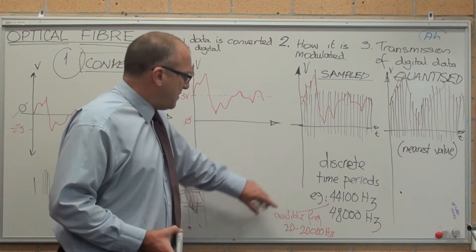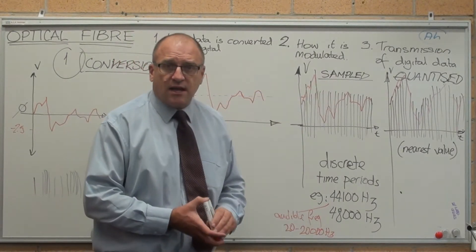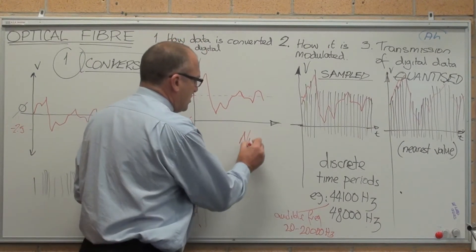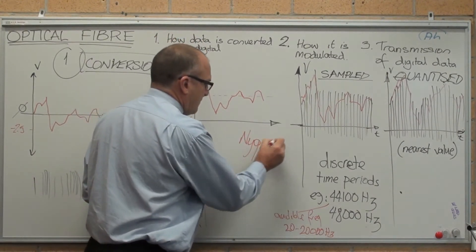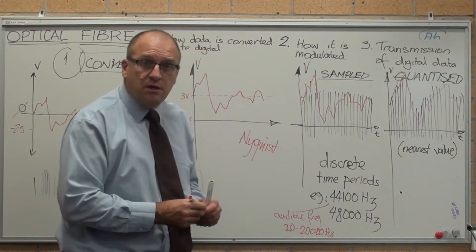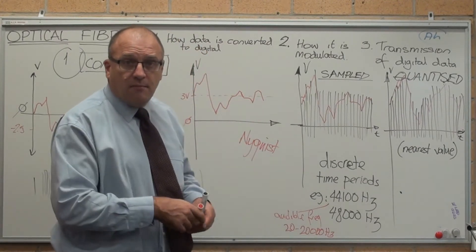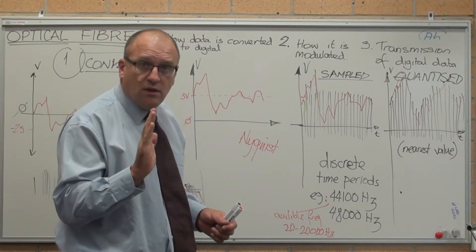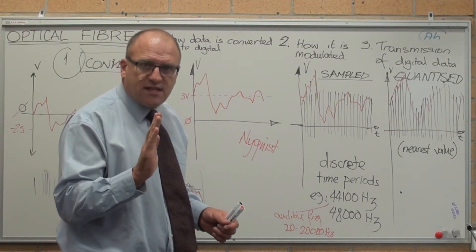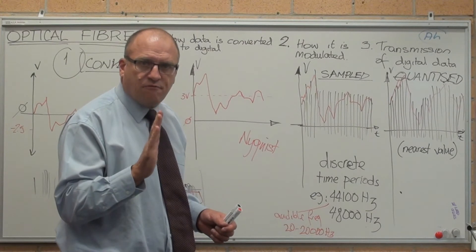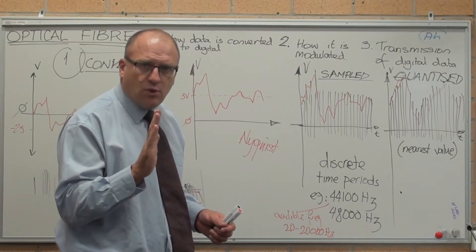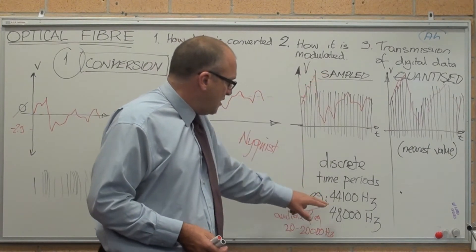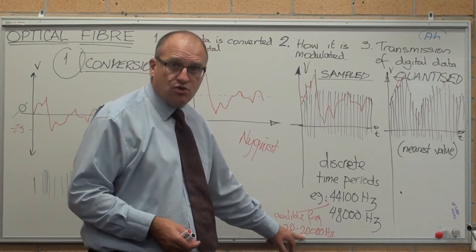First up is the sampling frequency, outside the syllabus for a guy called Nyquist. A mathematician figured out if you're going to sample a signal, the minimum rate of sampling needs to be twice the maximum frequency you are looking for. The maximum frequency we look for is 20,000 Hz.